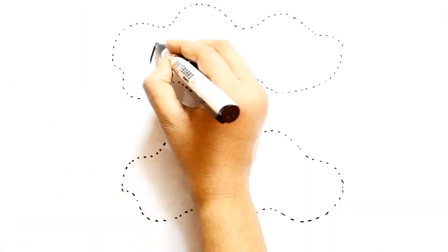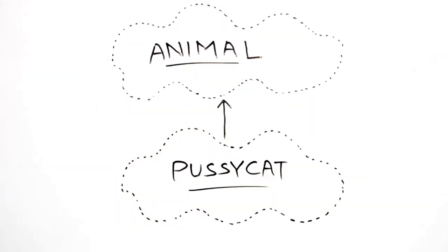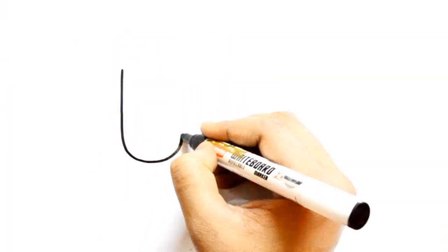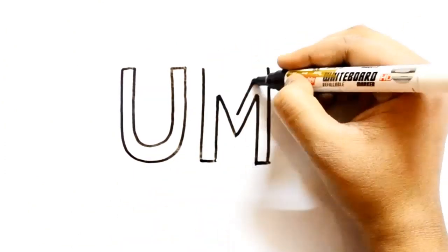Meanwhile, some clever people started to create notations for designing software. At some point in the 1990s, the clever people banded together and unified all their various notations.